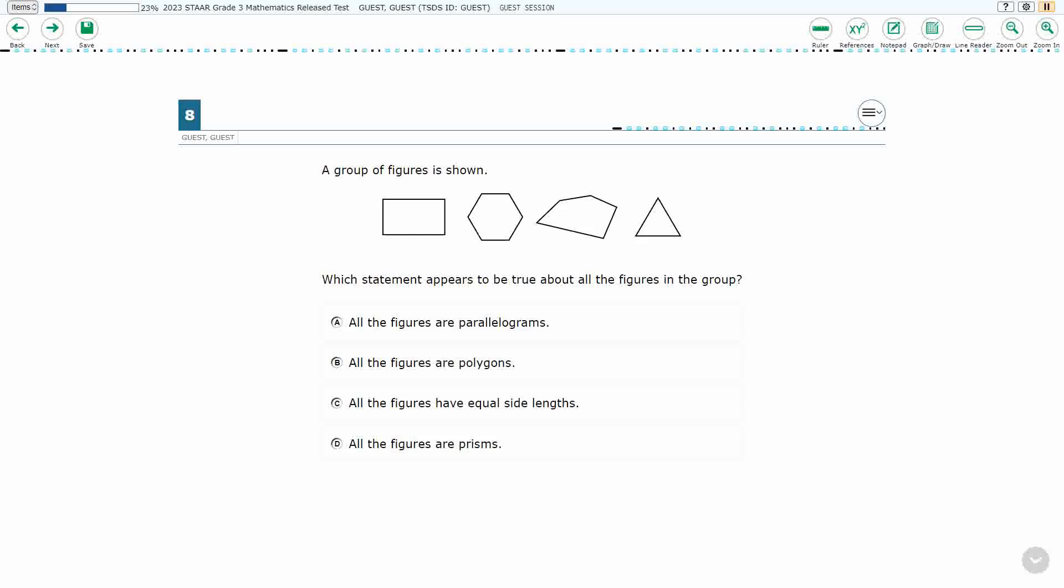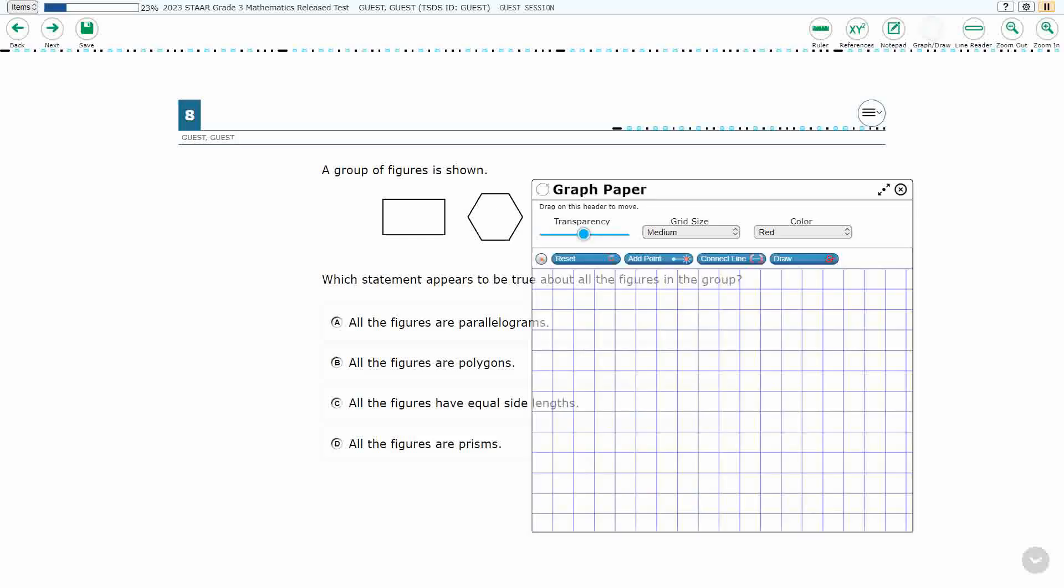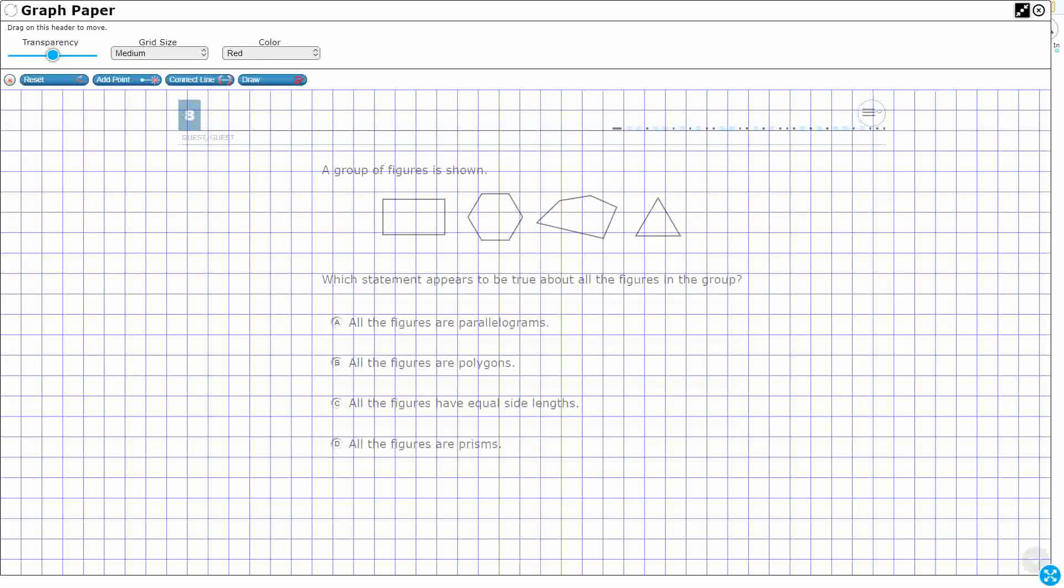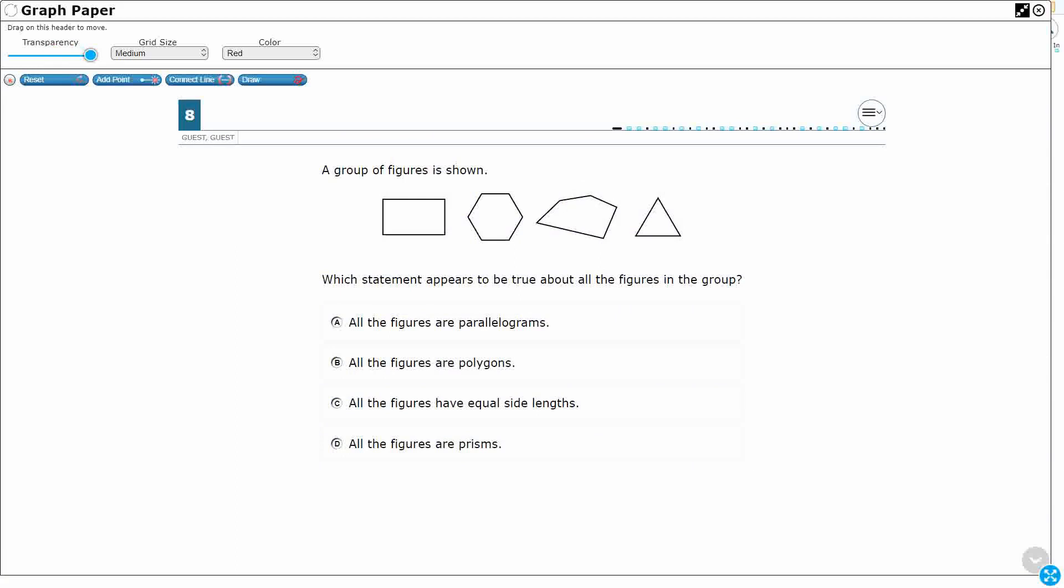All right, so we've got some shapes here and this one right here is kind of strange looking, this third one. And so what do we know about these shapes? These are two-dimensional shapes. We need to find a statement that is true. All right, so let's name these shapes. I would always highly recommend that.